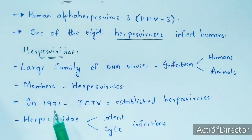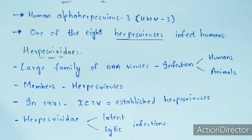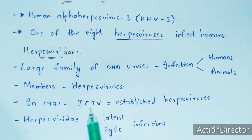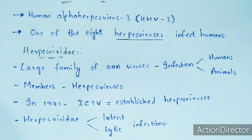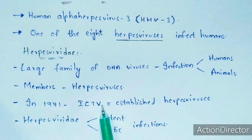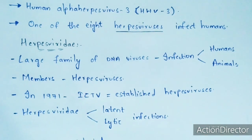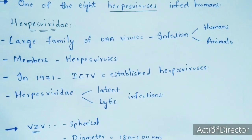According to 1971, ICTV established herpesviruses. ICTV stands for International Committee on Taxonomy of Viruses. The main function of ICTV is that it is a source which helps in the nomenclature of viruses — when a new virus is discovered, the name of that virus is given by ICTV. Herpesviridae causes infection in two forms: latent as well as lytic infections.